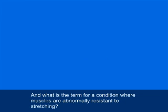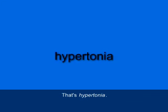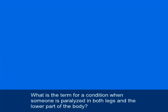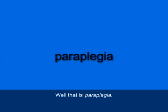What is the term for a condition where muscles are abnormally resistant to stretching? That's hypertonia, H-Y-P-E-R-T-O-N-I-A — a condition of excessive muscle tone. What is the term for a condition when someone is paralyzed in both legs and the lower part of the body? Well, that's paraplegia, P-A-R-A-P-L-E-G-I-A.